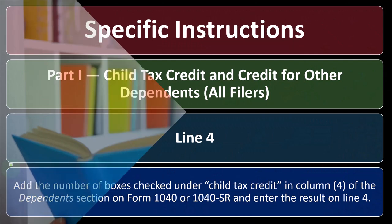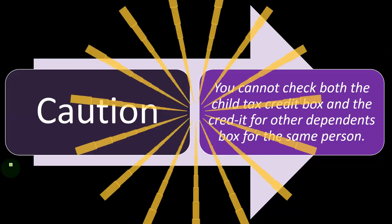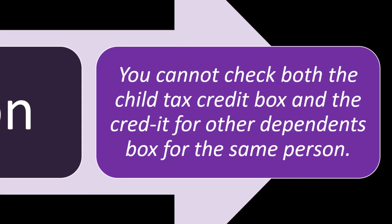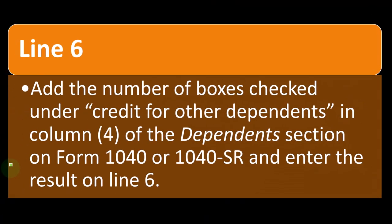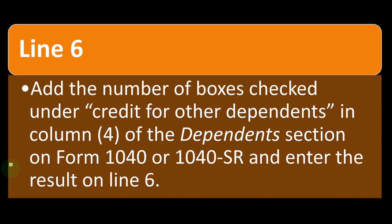On page two, we can interpret what's going to happen with the credit calculation just by glancing at page one and whether you checked the box for child tax credit or other dependent next to your dependents. Caution: you cannot check both the child tax credit box and the credit for other dependents box for the same person. If you do that, it would be a red flag to the IRS and could cause a delay on the return. Line number six: add the number of boxes checked under 'credit for other dependents' in column four of the dependents section on Form 1040 or 1040-SR and enter the result on line six.